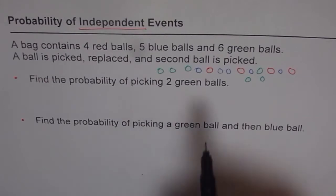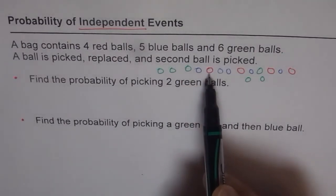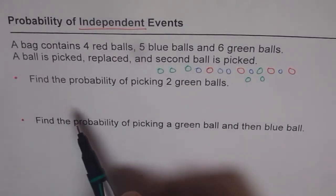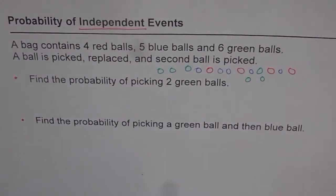If you would not have replaced, then the second pick would have been influenced. If you pick up a red ball and don't replace it, the total number of balls becomes 14 instead of 15, with one less red ball. So the probability will be different for the second case since the total number of balls are different — that would be dependent events. I hope you understand independent and dependent.